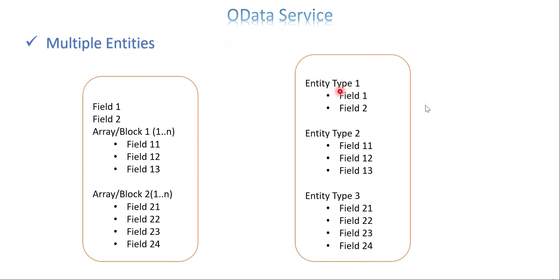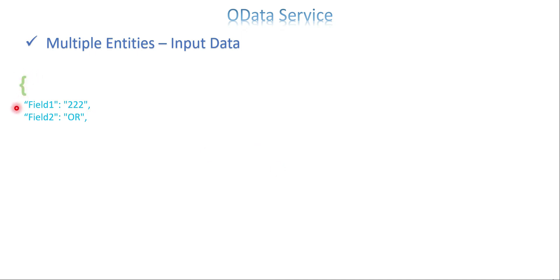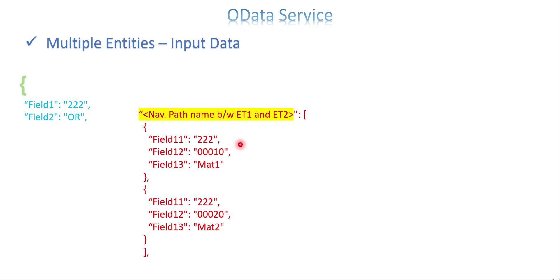We already know how to design this — we have done it before — so I'm going to use the same SEGW project for this example. The idea for passing input data is similar to what we've seen in the deep entity set POST method. Open a curly brace, then field one and field two: the field name is what you defined at design level, followed by a colon and the value. The double quotes, colon, and comma are very important — if you miss anything you will get an XML parsing error. For the second entity, begin with the navigation path between entity one and entity two, inside double quotes, followed by a colon and a square bracket.